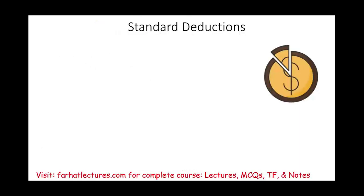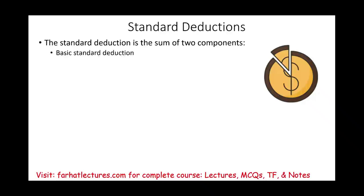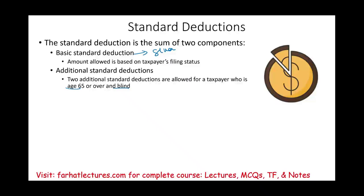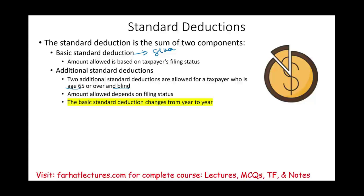Let's take a look at something called the additional standard deduction, because the standard deduction is the sum of two components. The basic one, which is given to you based on your filing status, and then we have an additional standard deduction. Specifically, there are two additional standard deductions allowed for taxpayers who are age 65 or over and blind. If you're over 65 or blind — and if you're both — you'll get two additional standard deductions. The amount depends on your filing status and changes from year to year.